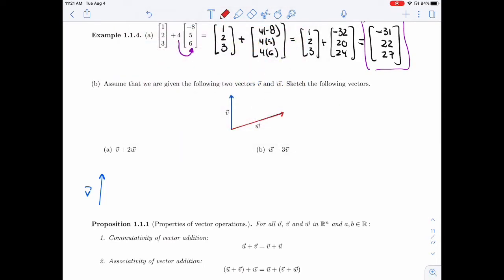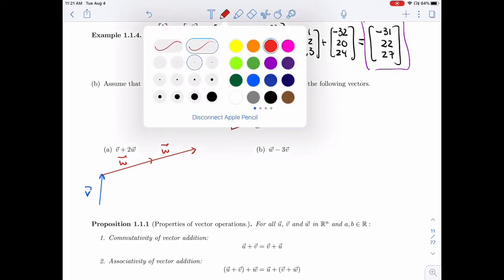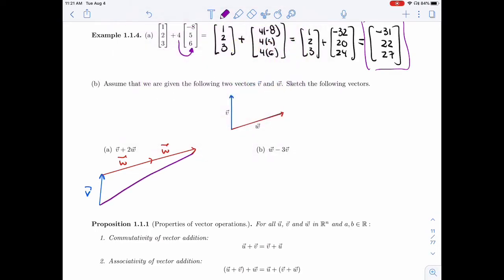So I have V, and then I want to do 2W. Now 2W, remember, means W stretched. So I draw W once, W twice. I've placed them tip to tail so that I can say, well, that total, this is V plus W plus W. This purple vector here is the one I want. It's V plus 2W.